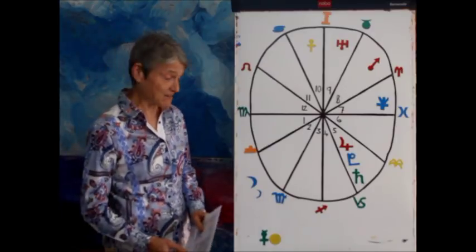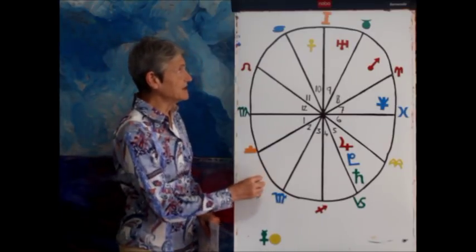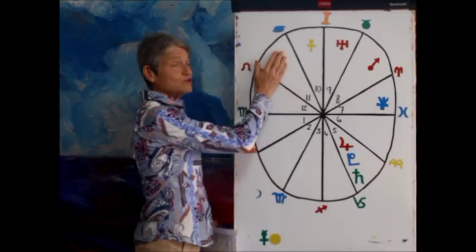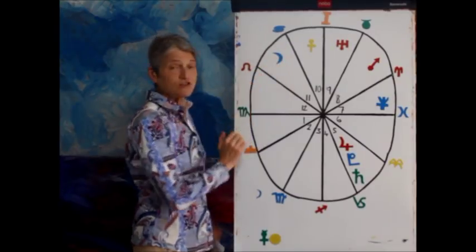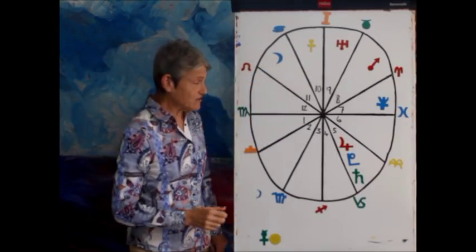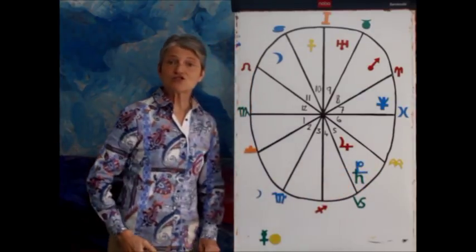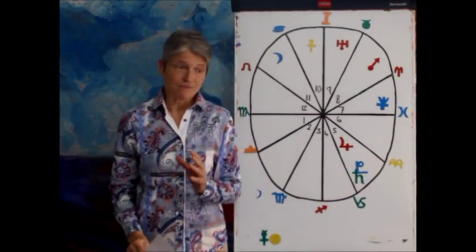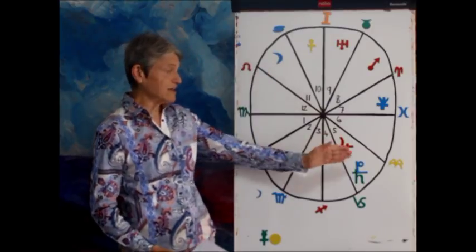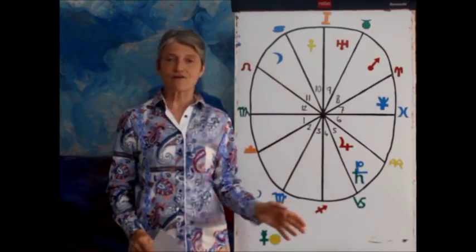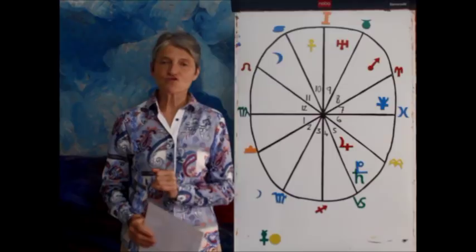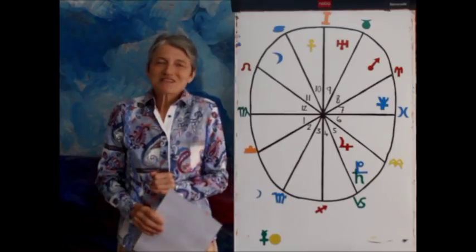So January the 10th, we start out with an eclipse happening here, a lunar eclipse in your 11th house. January the 12th, we've got Saturn and Pluto coming to conjunct together. So we've got an activation here of the 5th and the 11th house happening a lot during this year.